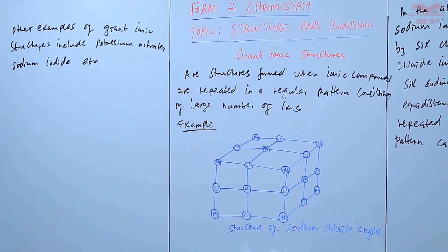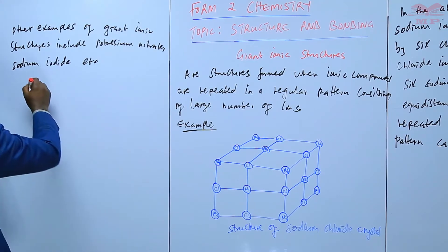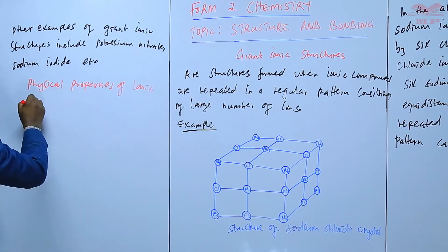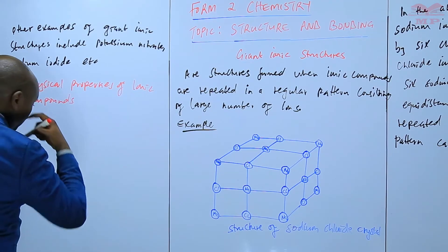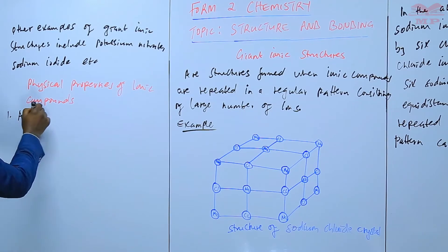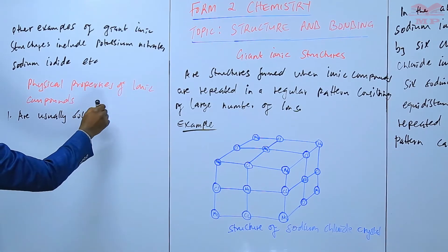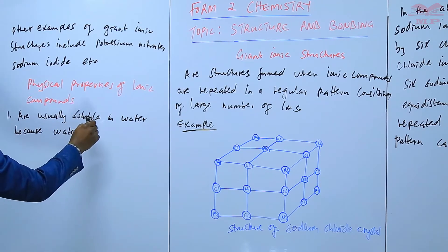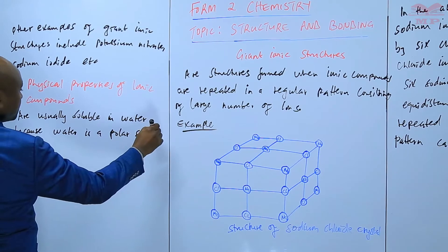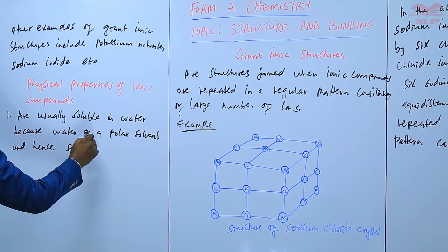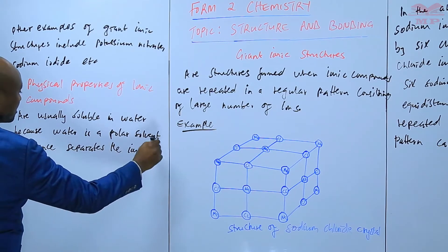Next, let's identify the physical properties of ionic compounds. The first physical property is that they are usually soluble in water — most of them are soluble in water. This is because water is a polar solvent, and hence it separates the ions in the structure or in the compound.